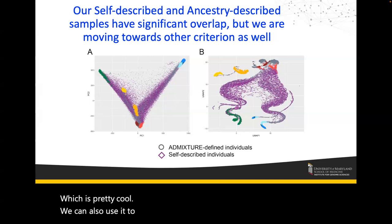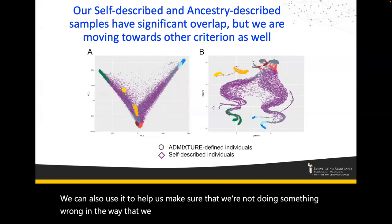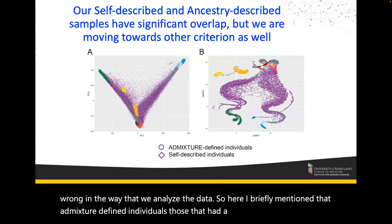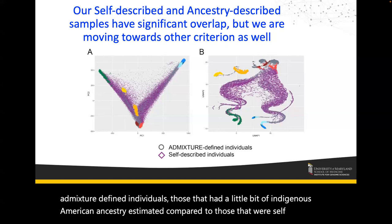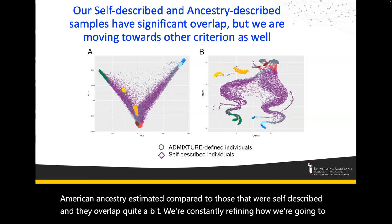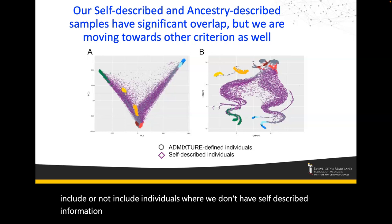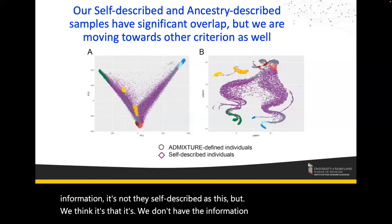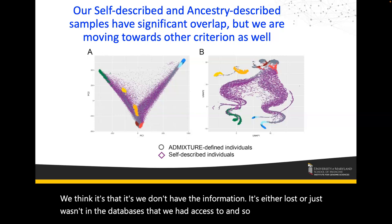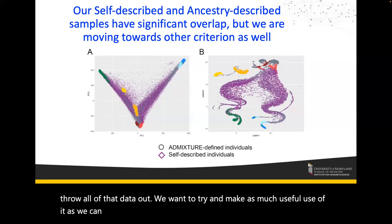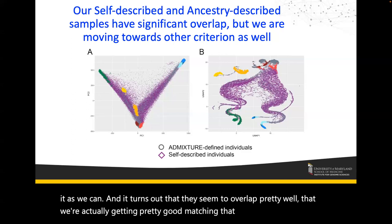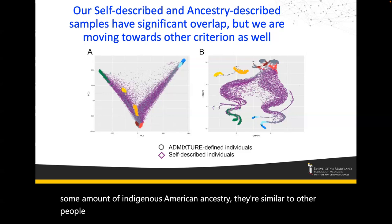We can also use this to make sure we're not doing something wrong in the way we analyze the data. Admixture-defined individuals — those estimated to have some indigenous American ancestry — compared to those who were self-described overlap quite a bit. We're constantly refining how we include individuals where we don't have self-described information; the data may just be lost or wasn't in the databases we had access to. It turns out they seem to overlap well — if they have some amount of indigenous American ancestry, they're similar to other people self-described as Latin American.